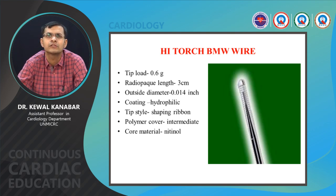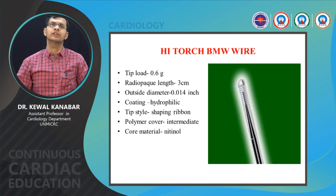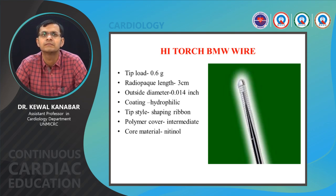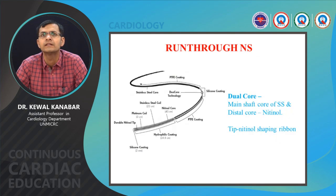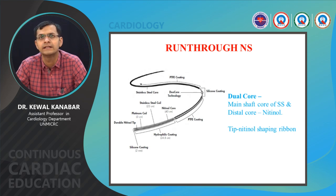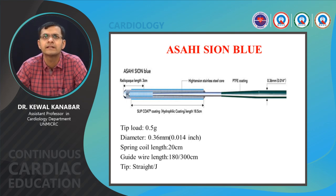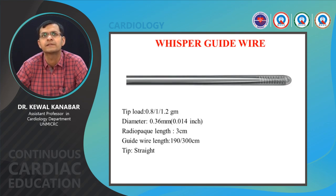The BMW wire is one of the most commonly used wires — tip load of 0.6 gram, balanced type, radiopaque length of 30 mm, a 0.014 wire with hydrophilic non-polymer coating and a nitinol core. The Run-Through has a dual core: main shaft of stainless steel and distal core of nitinol with a nitinol shaping ribbon tip. Sion Blue has a tip load of 0.5 gram, 0.014 diameter, spring coil length of 20 cm, comes in 180 cm, either straight or J-tip, with a radiopaque length of 30 mm.